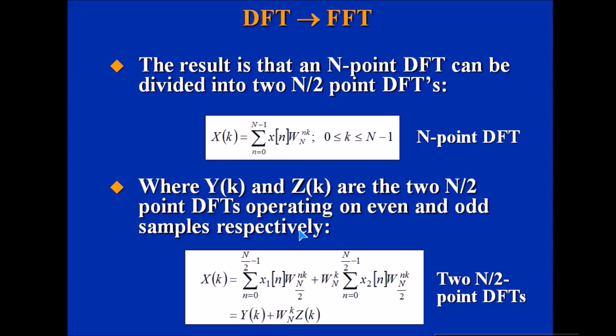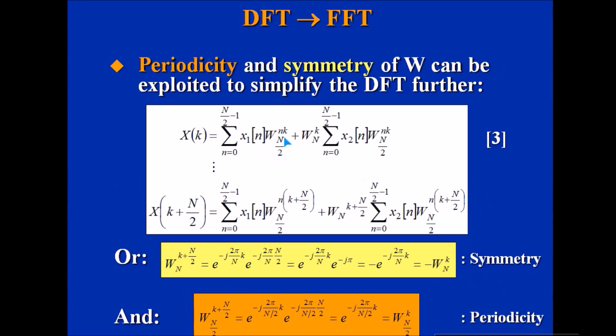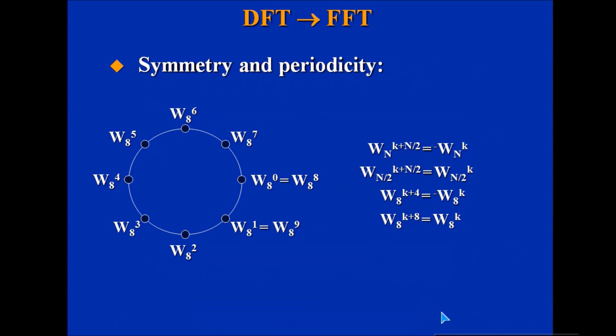We have two N/2 point DFTs. The basic point is dividing N by 2, and then we look at periodicity and symmetry of the series or sequence. This is the symmetry, this is the periodicity. Periodic means it repeats itself, and symmetry means it looks similar.